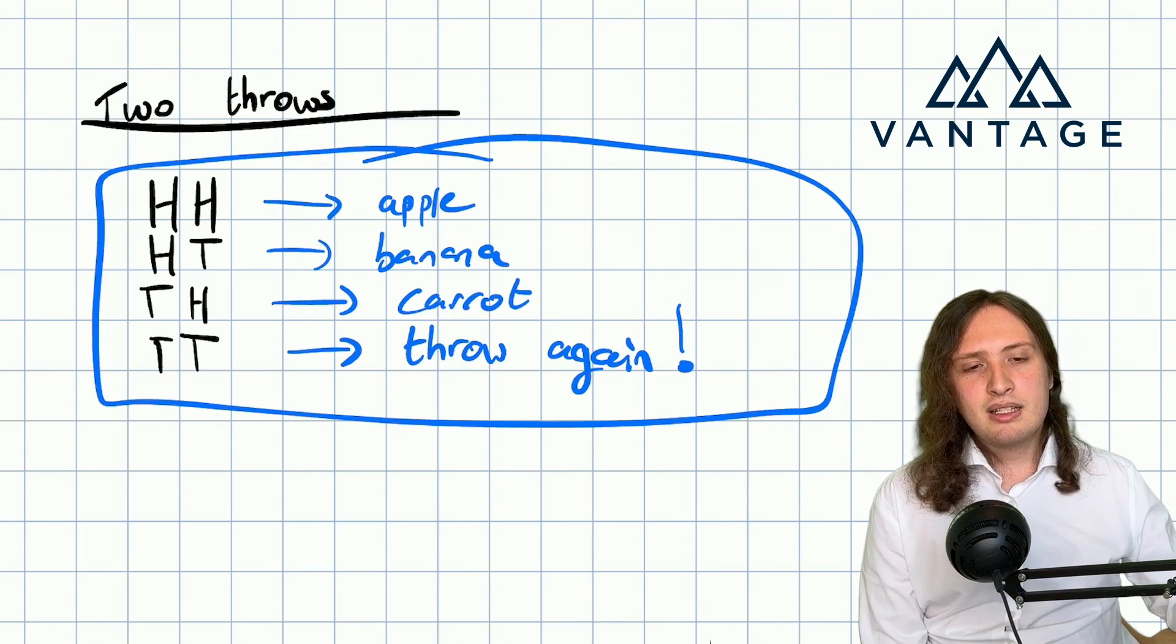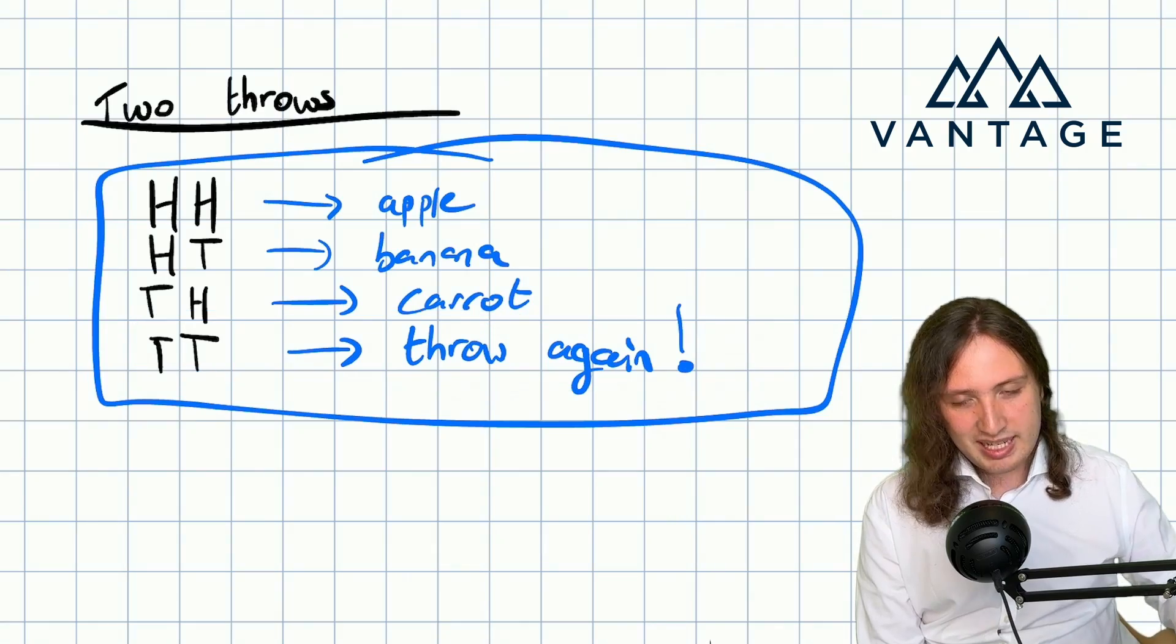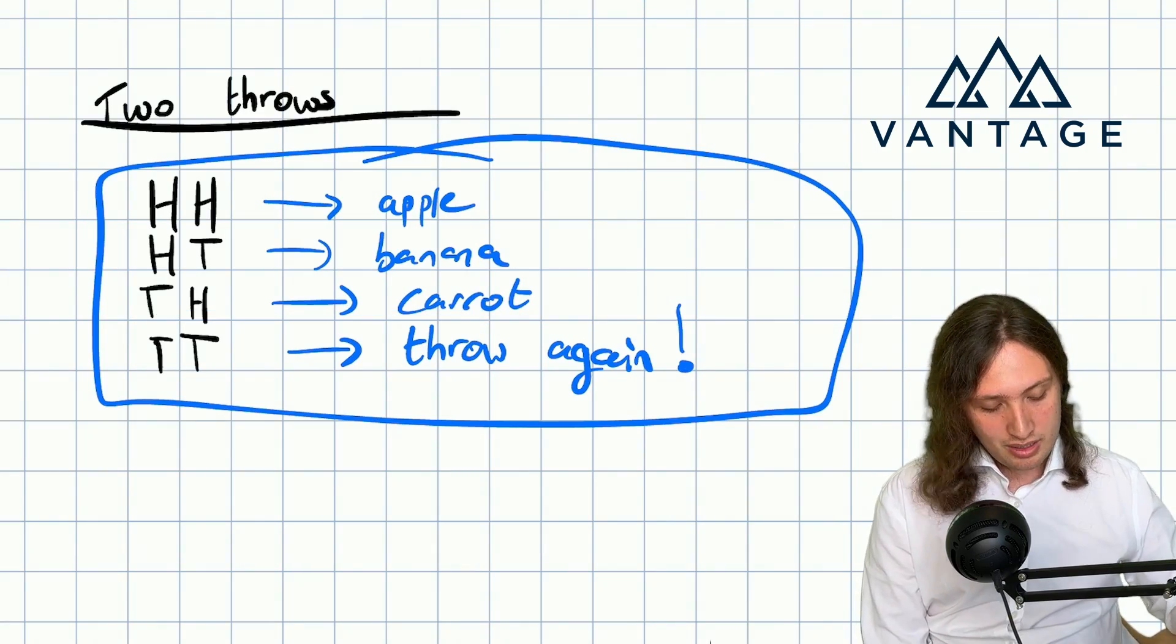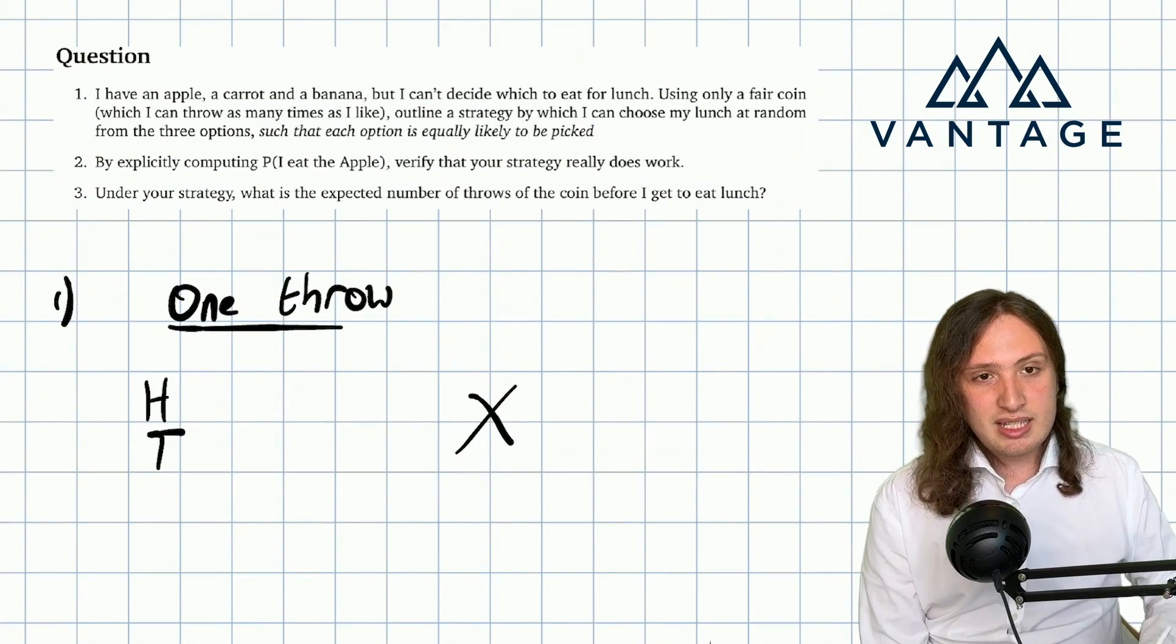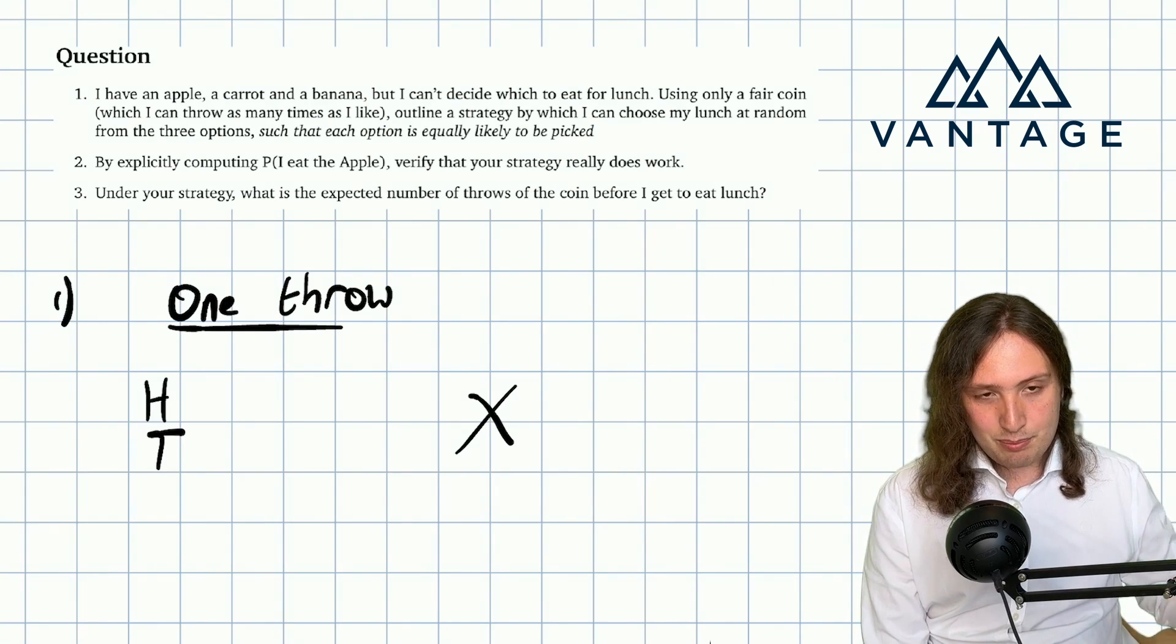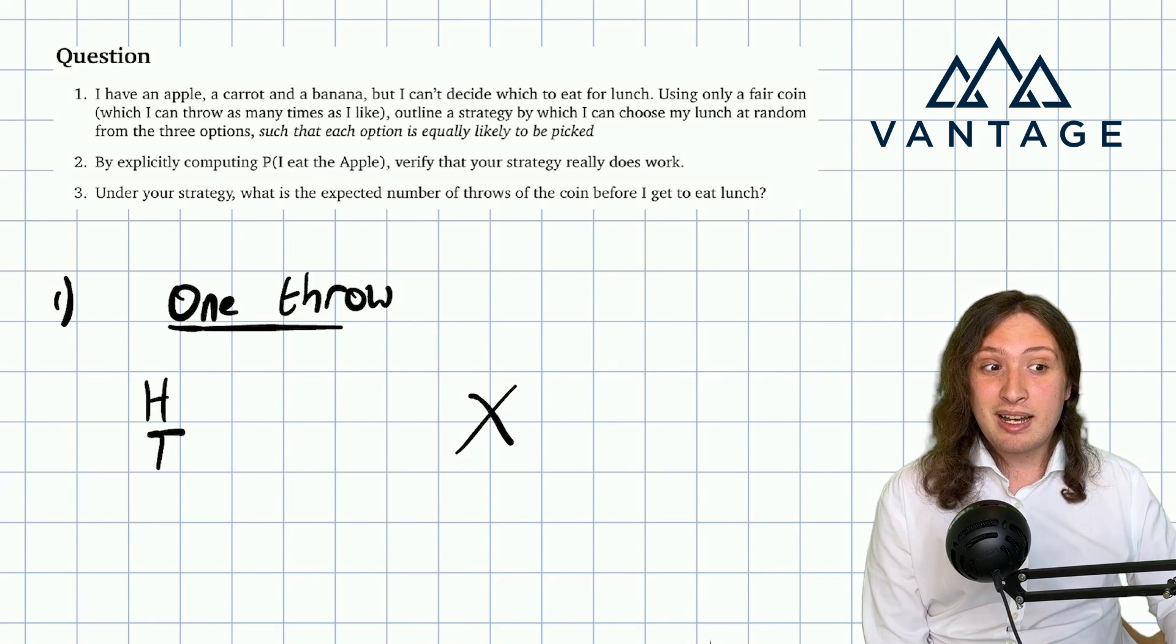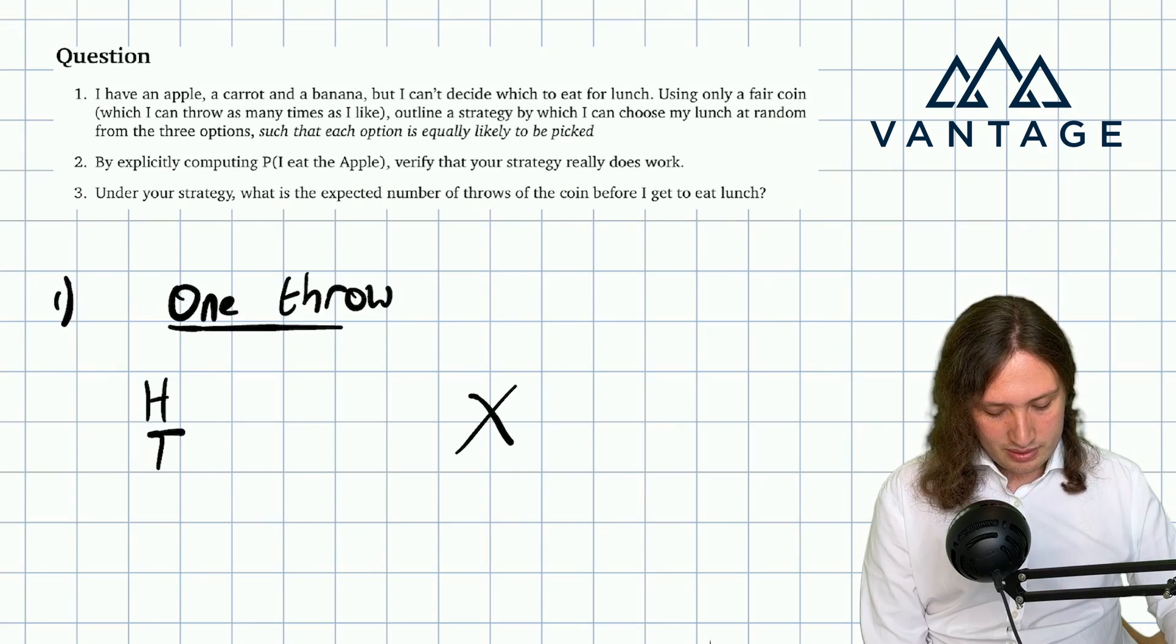Now of course, someone could be sceptical and say, are you sure throwing again really doesn't give favour to one option? Of course it doesn't, but it's reasonable to now try to, as we're asked to in the second part of the question, explicitly compute the probability that we eat an apple in order to verify that it really does work. So let's see what happens if we do that.